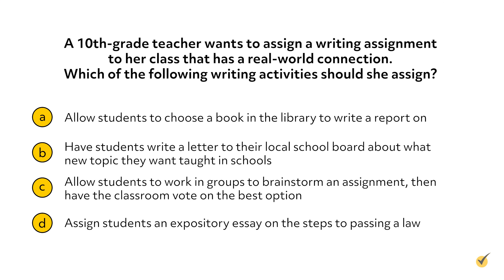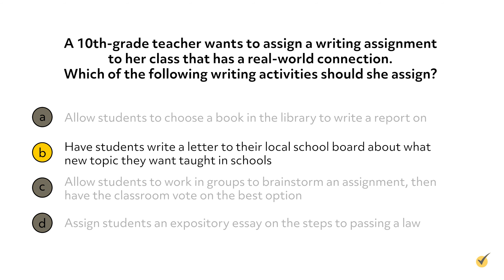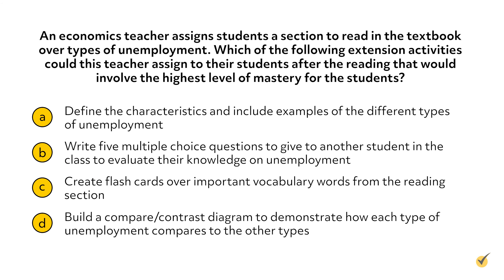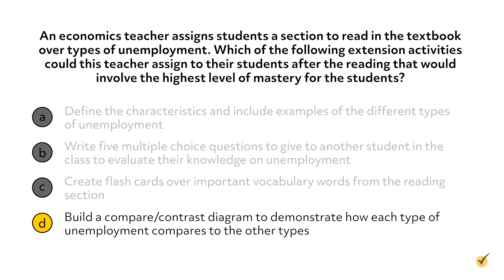A 10th grade teacher wants to assign a writing assignment to her class that has a real world connection. Which of the following writing activities should she assign? Each of these options is a reasonable assignment and is productive in some manner. But only one of the answers requires students not only to describe a topic, but also to reflect on it and evaluate why they would like it to be taught. The correct answer is B. Let's try one more to see which emphasizes critical thinking. An economics teacher assigns students a section to read in the textbook over types of unemployment. Which of the following extension activities could this teacher assign to their students after the reading that would involve the highest level of mastery for the students? The first three options would show that the students have a basic understanding of the subject matter and are strong on vocabulary. But only one answer, D, asks students to compare and contrast, therefore showing a deeper knowledge on the topic, as well as the ability to use this information to make connections.